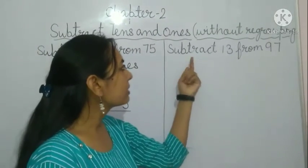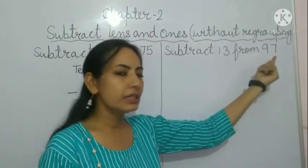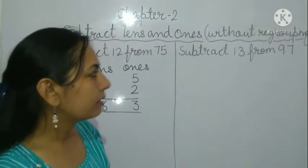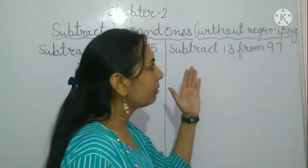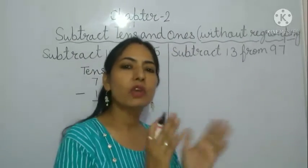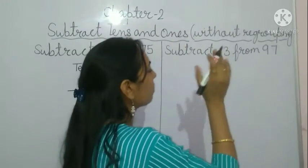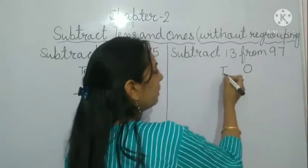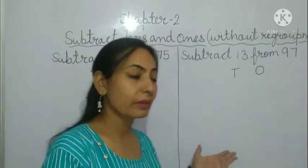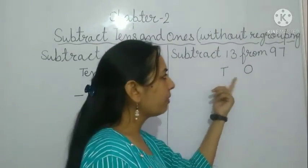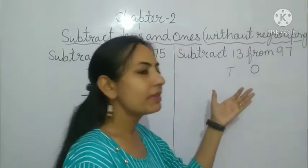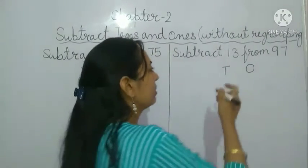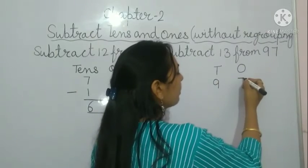Now move to the next question: subtract 13 from 97. We write them in their proper places. We can use short forms — O for ones and T for tens. First we take the greater number, 97: nine tens and seven ones, so we write nine tens and seven ones.